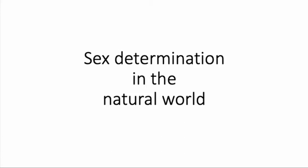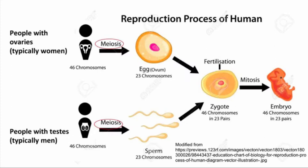So far we've been talking about a very typical way of sex determination. We've been assuming that people who carry ovaries are typically women — they do meiosis to produce eggs — and people that carry testes are typically men, doing meiosis to produce sperm. The egg and sperm combine in fertilization to produce the zygote, which is the first cell that divides by mitosis to produce an embryo.